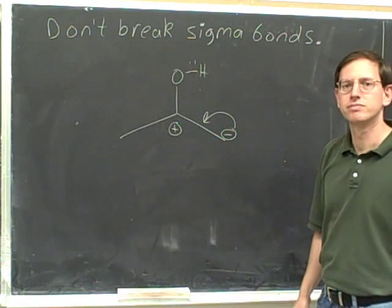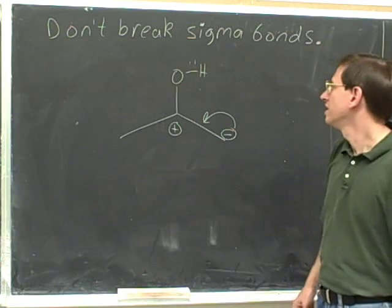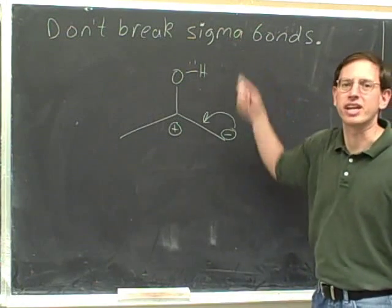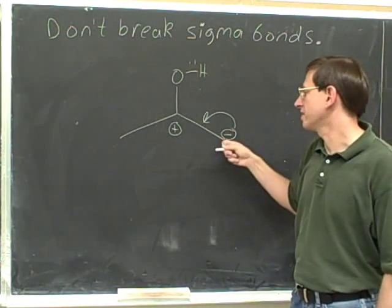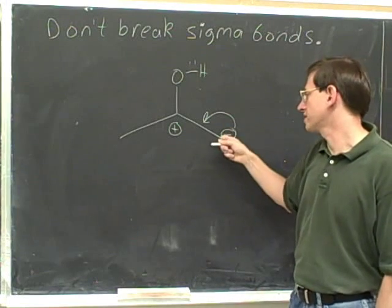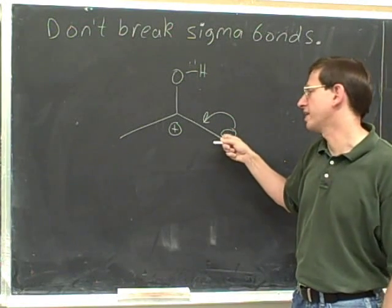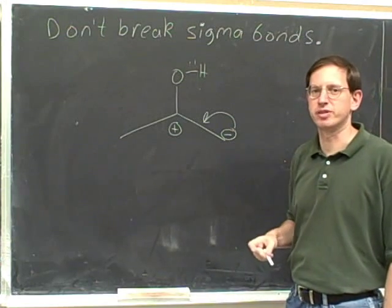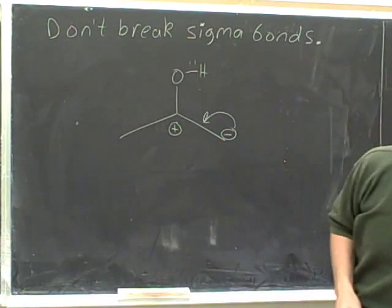Is this legal? Well, it definitely doesn't violate this rule — the tail here is definitely not on a single bond. The tail is coming from the lone pair. Remember that if the tail is coming from a negative charge, we interpret that as coming from a lone pair. So that's perfectly fine.